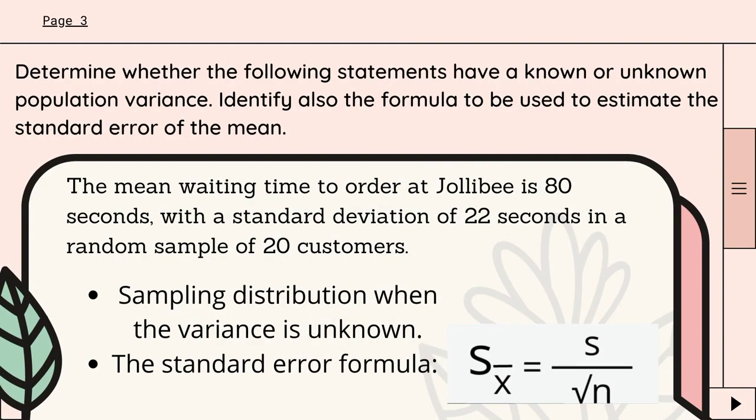Determine whether the following statements have a known or unknown population variance. Identify also the formula to be used to estimate the standard error of the mean.